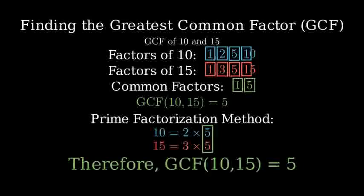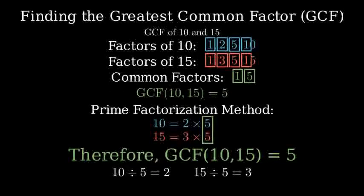The greatest common factor of 10 and 15 is 5. We can verify this is correct because 5 divides evenly into both 10 and 15. 10 divided by 5 is 2, and 15 divided by 5 is 3.